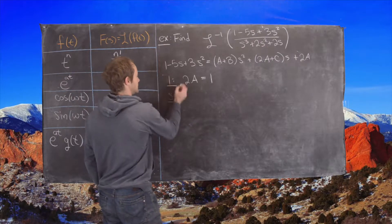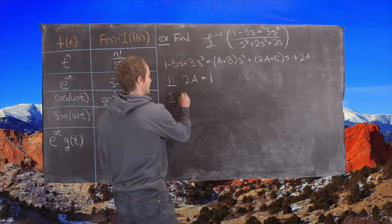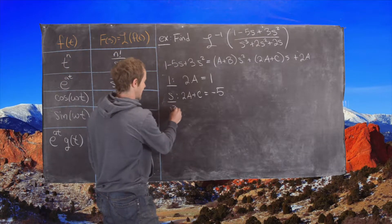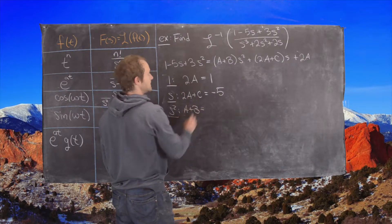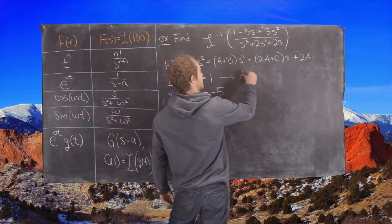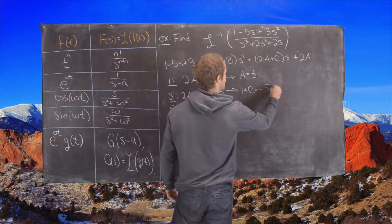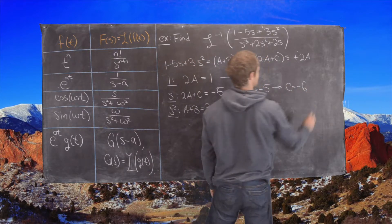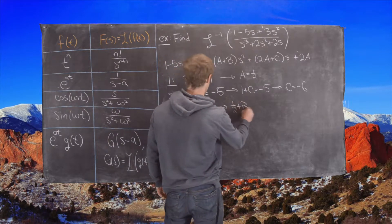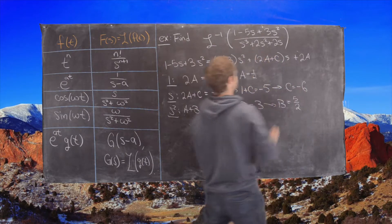For the coefficient of s on the right-hand side we have 2A plus C, and on the left-hand side negative 5. For the s squared coefficients, on the right-hand side A plus B, and on the left-hand side 3. This gives us A equals 1 half. Then 1 plus C equals negative 5, so C equals negative 6. And 1 half plus B equals 3, so B equals 3 minus 1 half, which is 5 halves.